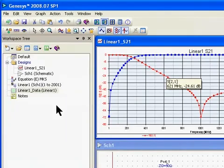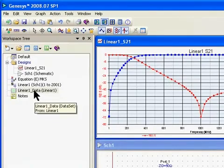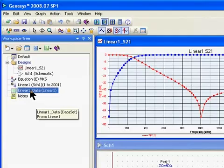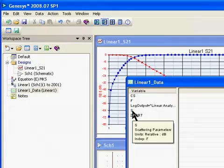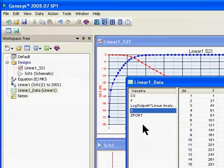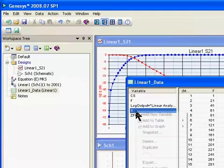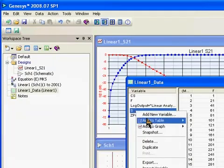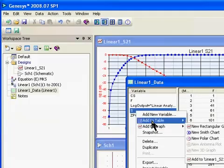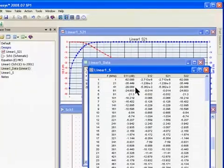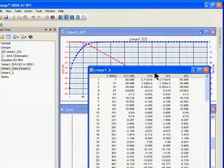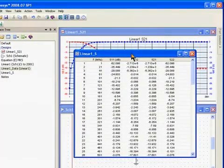Another way we could have graphed this is to go into our data set. If I double click in the workspace tree on our data set, you can see it has the data that was created, and we have S data created. I can right click on this S data, and you can see I have add to table or add to graph. I'll put it in a table since we already have a graph, and new table. It creates a new table of our S parameters. There's a nice quick way of creating either a table or a graph instantaneously.